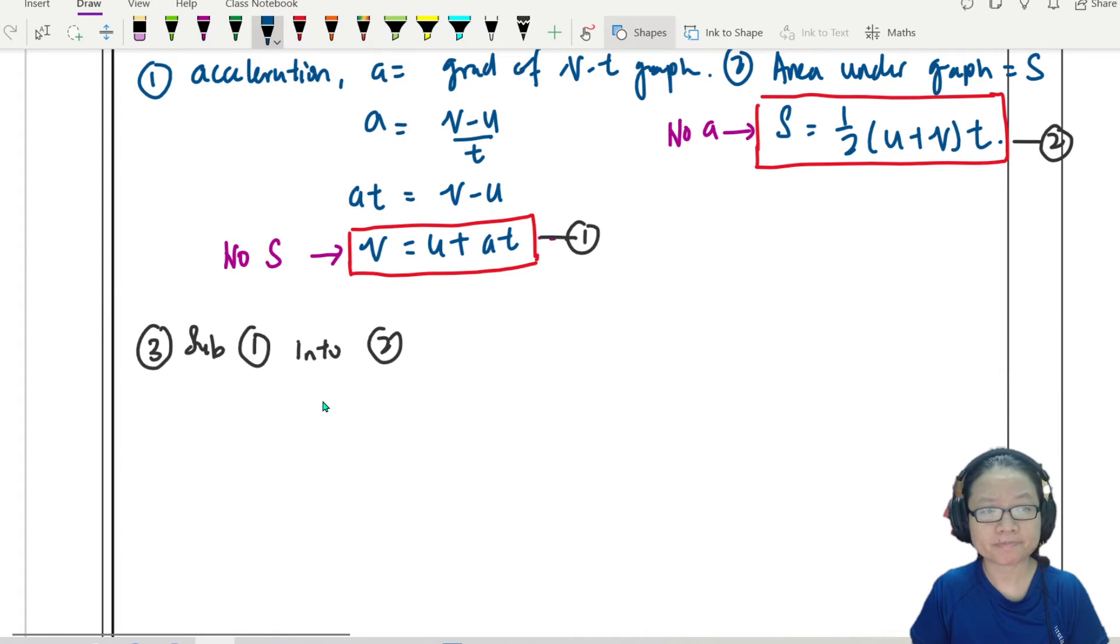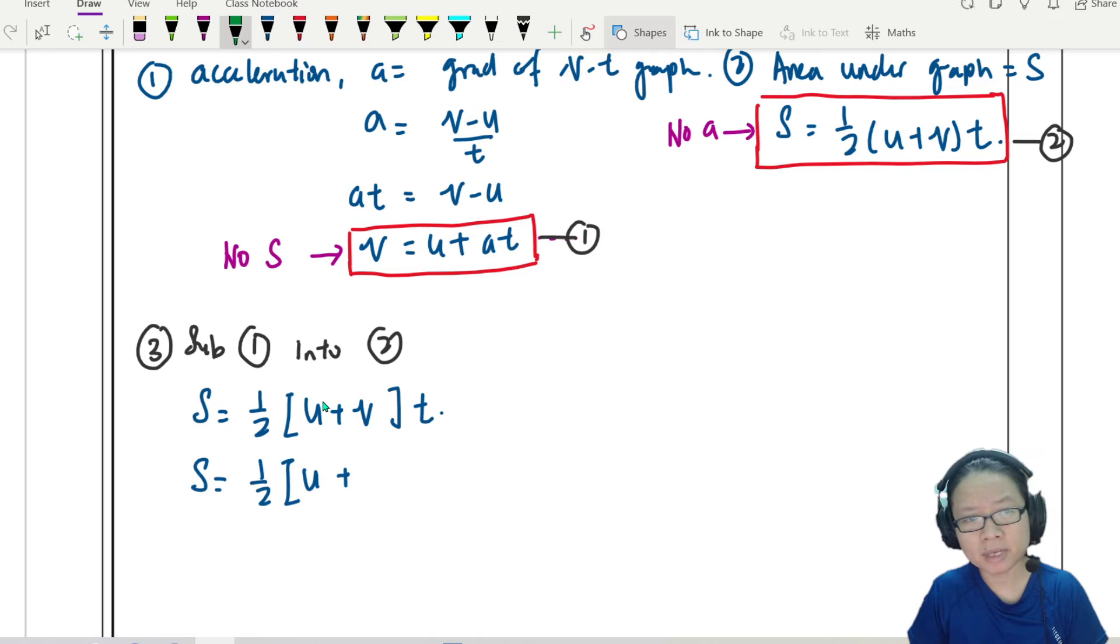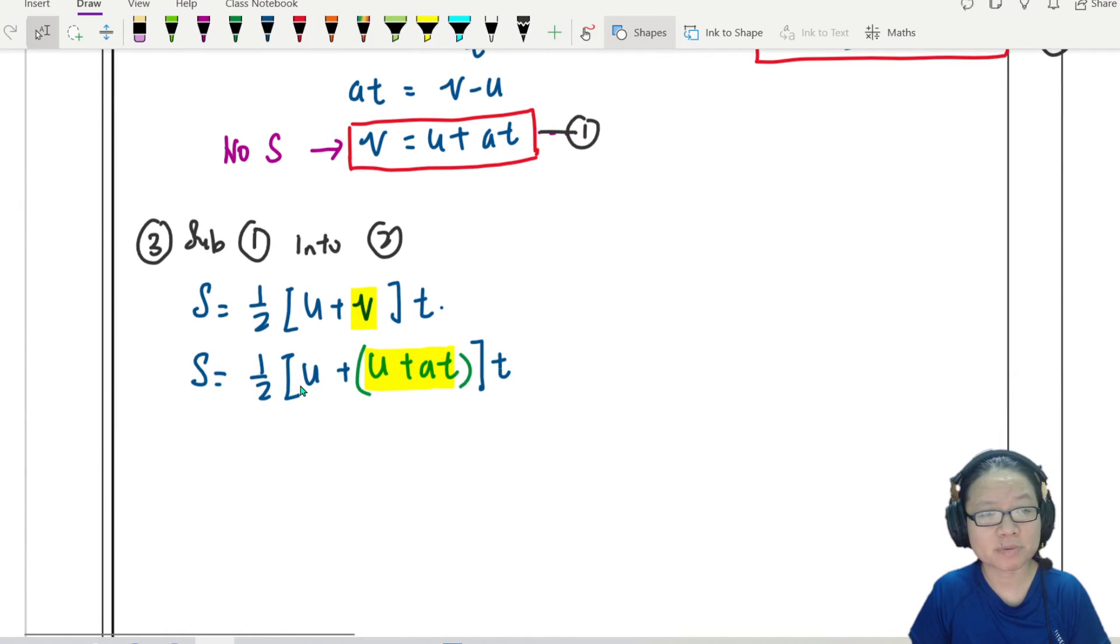So right now, I will substitute. I'll start with s is equal to half bracket u plus v times t. So equation one will be substituted, meaning the v will go away. To make it a bit easier for you, I'll change pen color. This v is u plus at. So whatever I substituted here, it will be this one. Let's close bracket and do some simple algebraic substitution.